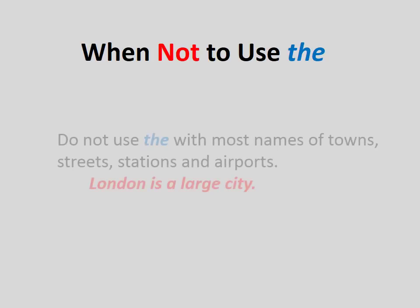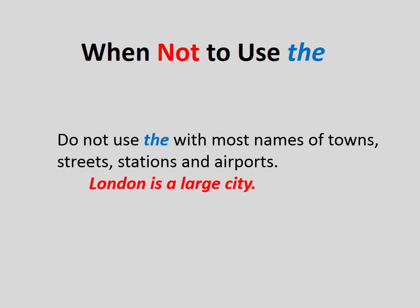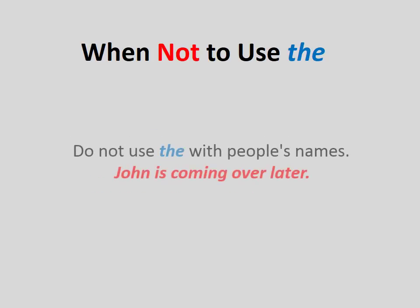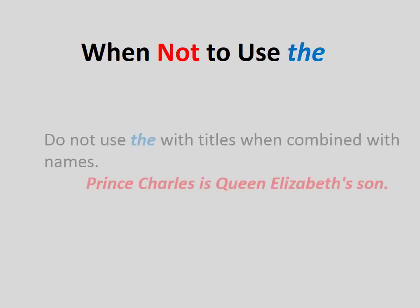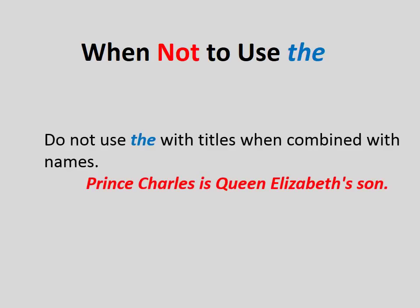Do not use 'the' with most names of towns, streets, stations, and airports — for example, 'London is a large city.' Do not use 'the' with people's names — for example, 'John is coming over later.' Do not use 'the' with titles when combined with names — for example, 'Prince Charles is Queen Elizabeth's son.'